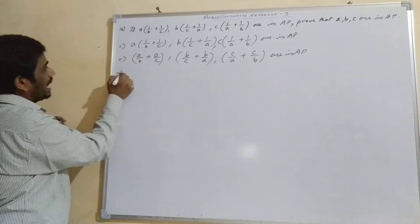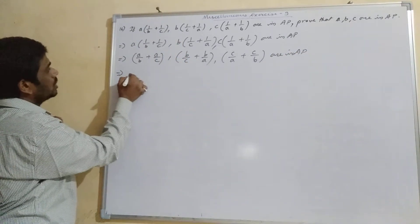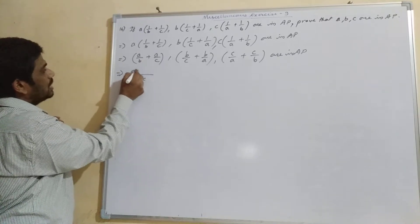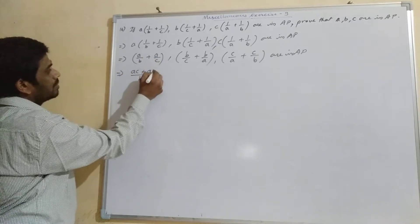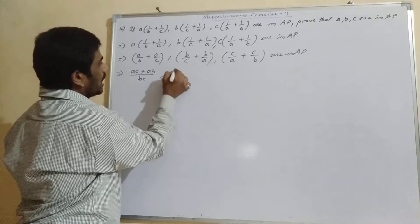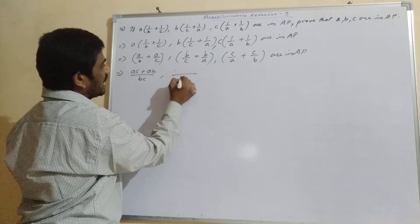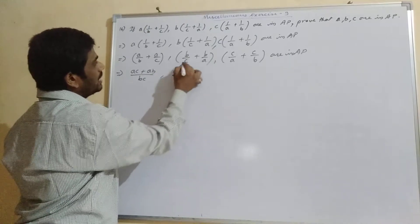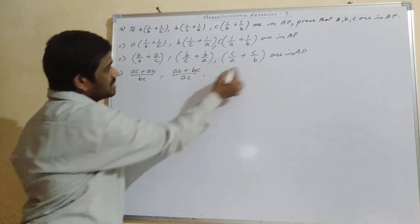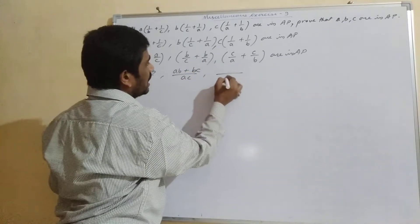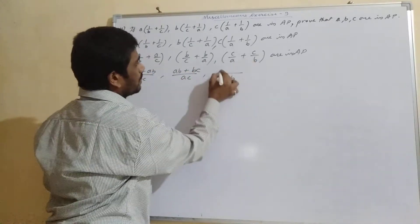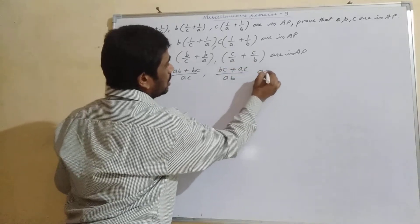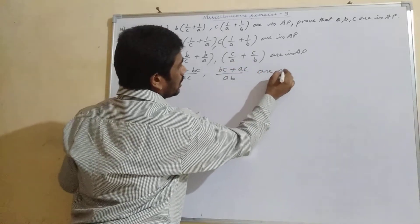Now if we take LCM here, we will get BC, and we can multiply to get AC + AB. Here the LCM will be AC, giving AB + BC. And here the LCM will be AB, giving BC + AC. These are also in AP.